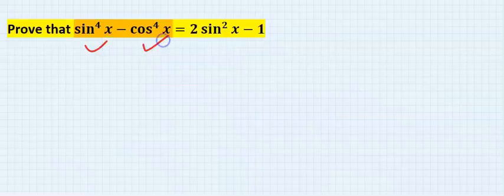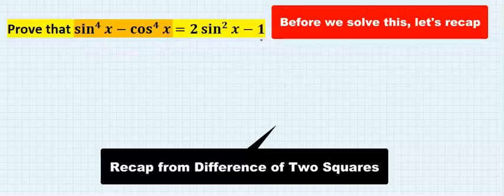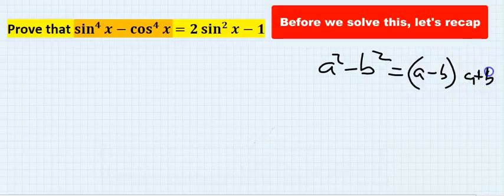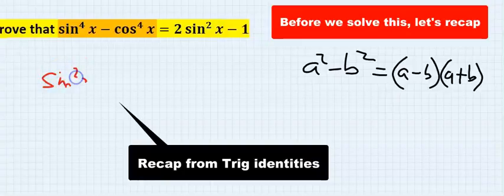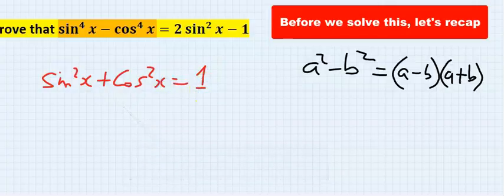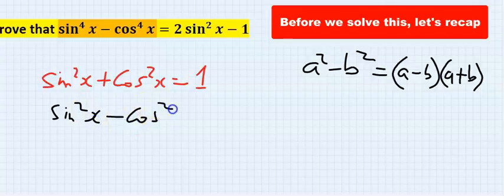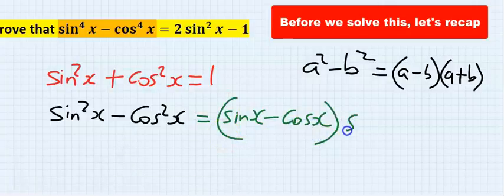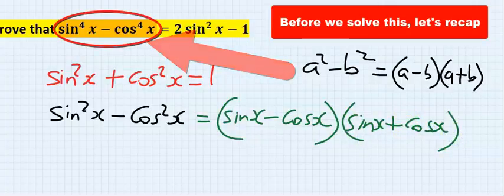We want to prove that this minus this is equal to this. Recap: difference of two squares — a squared minus b squared gives you (a minus b)(a plus b). Also, sine squared x plus cos squared x equals one. However, sine squared x minus cos squared x is not equal to one — this is a difference of two squares, giving you (sine x minus cos x)(sine x plus cos x).